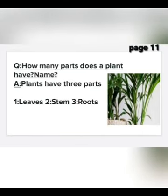Question number 2: how many parts do plants have? Name them. Plants have mainly three parts. First one, leaves. Second, stem. Third, root.